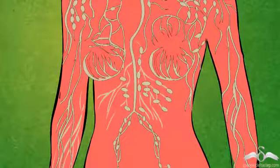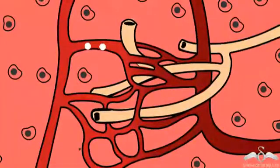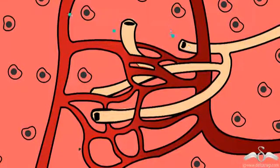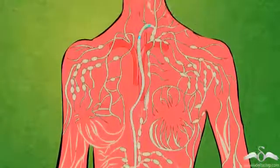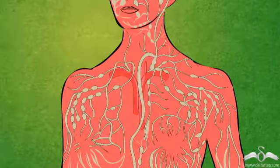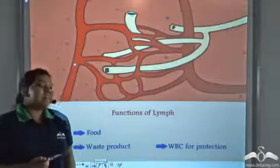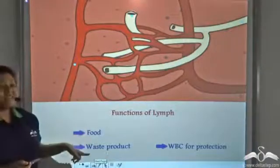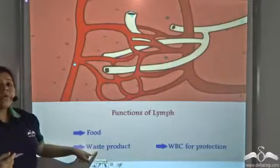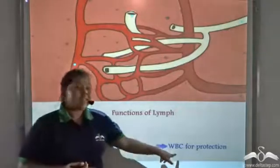These narrow lymph vessels originate and terminate in the main blood vessels. Because of high pressure, plasma oozes out of the capillaries into the tissue space, then enters into the narrow lymph vessels, and lymph carries these molecules to different parts of the body, finally terminating in the blood vessels. The functions of lymph are to carry food and waste products, and it also transports white blood cells for protection.